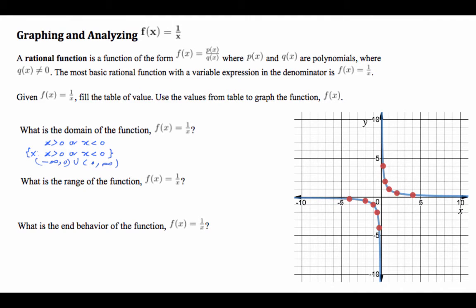These are the values you should get. For set notation, you may write: x is all real numbers, x ≠ 0. That might be a little quicker.